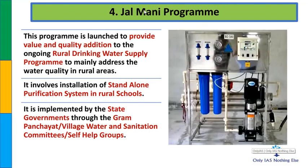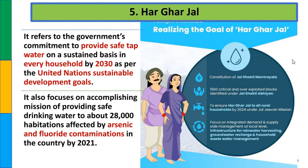अगला scheme है जल मणि program. इसमें water purification systems rural schools में install किए जाएंगे, जिससे स्कूली बच्चों को safe drinking water मिल सके. यह scheme state governments द्वारा implement की जा रही है और gram panchayat, village water and sanitation committees तथा self-help groups का भी participation ensure किया जाता है.